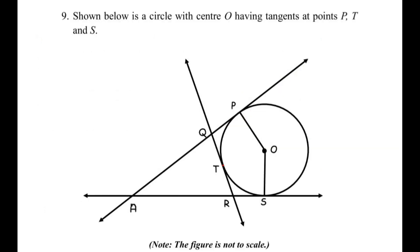Now let us apply this theorem to our problem. There are three external points to the circle: point Q, point R, and a third point I have labeled A (not labeled in the original question). A is an external point through which two tangents AP and AS are drawn, so the length of AP equals the length of AS. Similarly, for external point Q, the length of QT equals the length of QP.